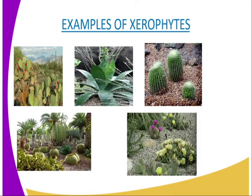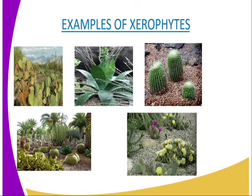Eighth, some plants have deep roots to absorb water from deep in the soil — for example, the acacia tree. Other plants have superficial roots which grow close to the soil surface to absorb water after a light shower of rain. Ninth, some plants store water in large parenchyma cells contained in succulent stems and leaves. Tenth, some xerophytes have a very short life cycle to evade drought, and some survive as seeds or underground storage organs.